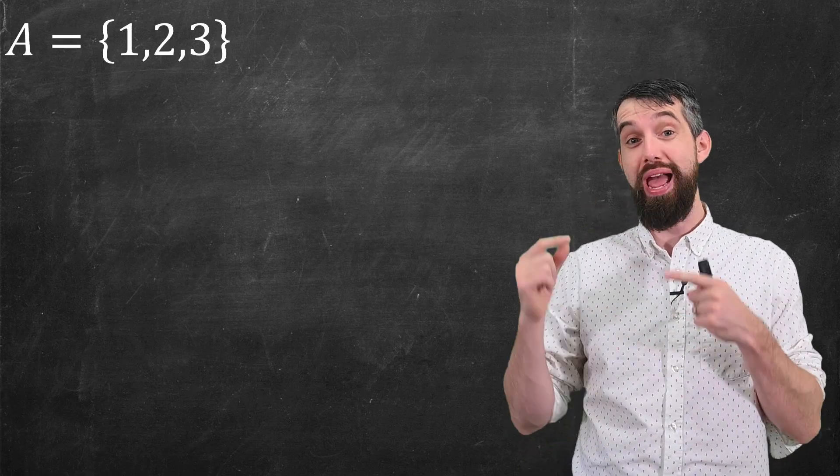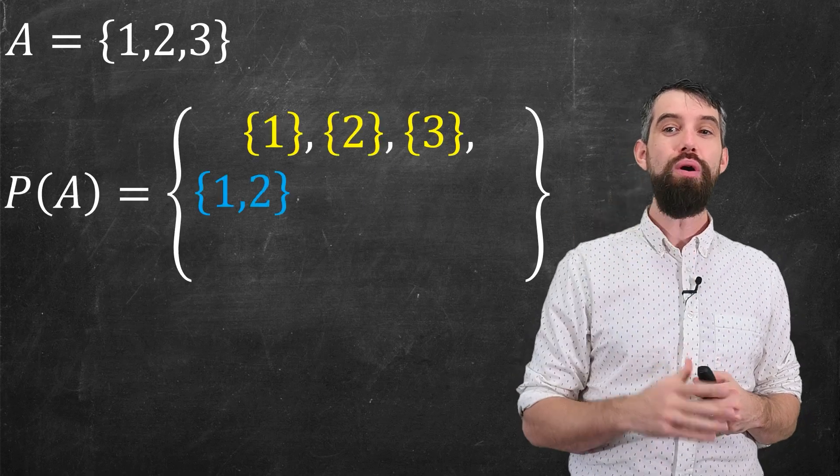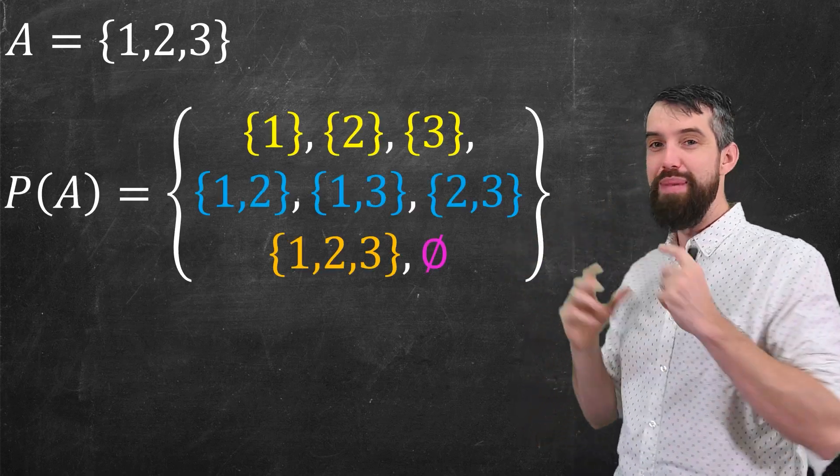Let's see the same idea, but not with apples and oranges. Let's use the numbers one, two, and three now. Well, then the power set of this set is, well, that messy thing.